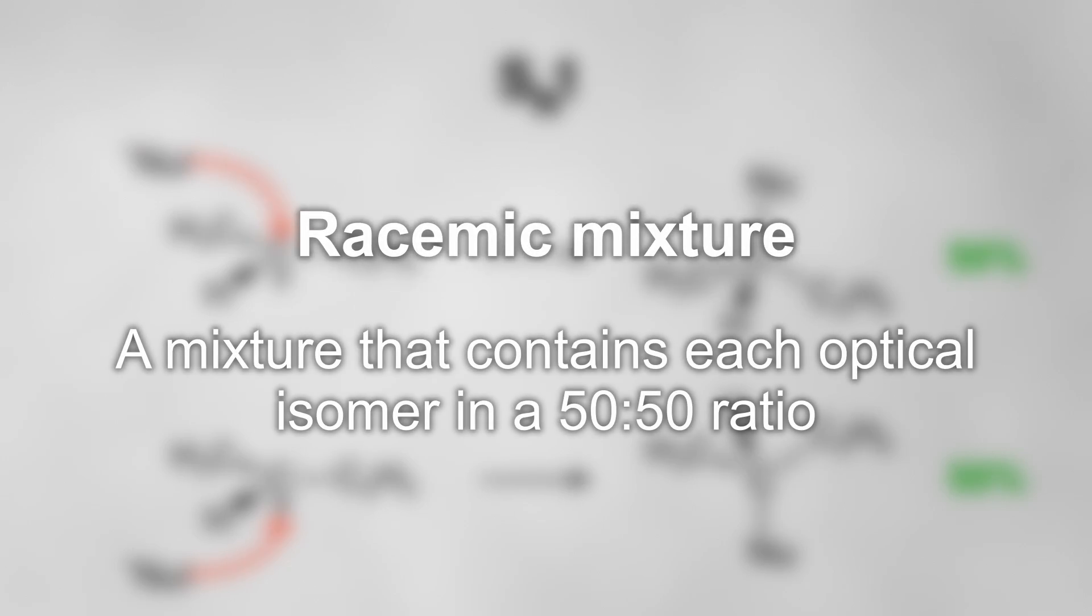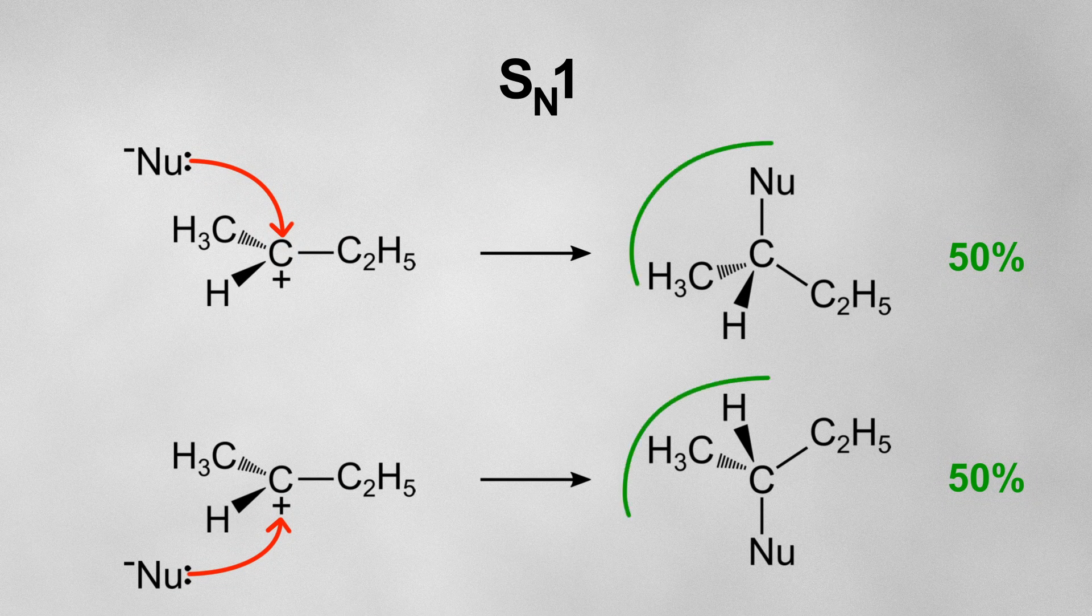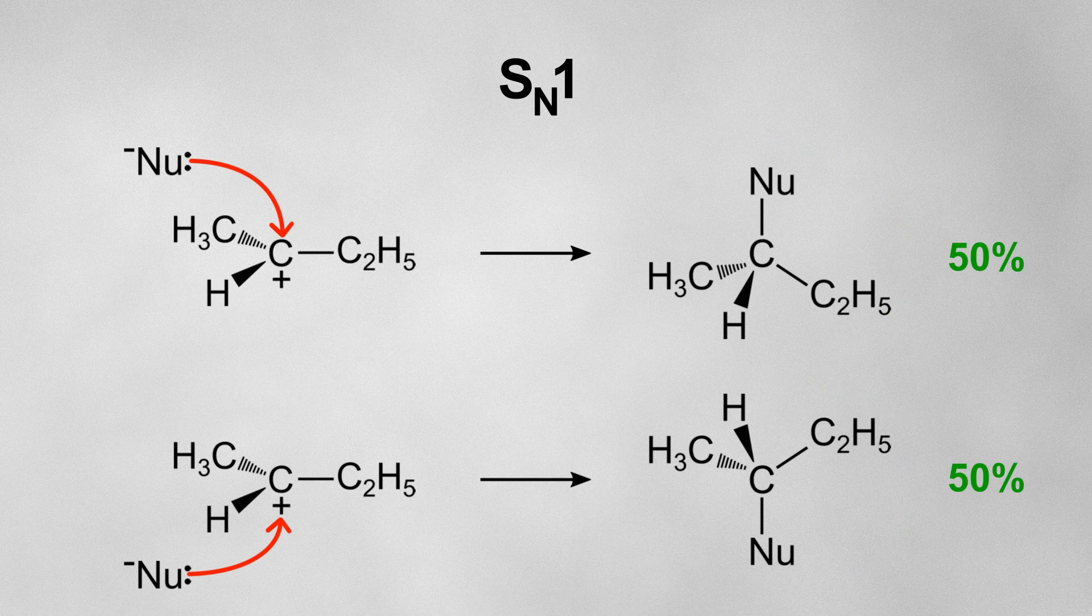This results in a racemic mixture, which is a mixture that contains each optical isomer in a 50-50 ratio, so that, overall, the mixture is not optically active, as both isomers effectively cancel each other out.